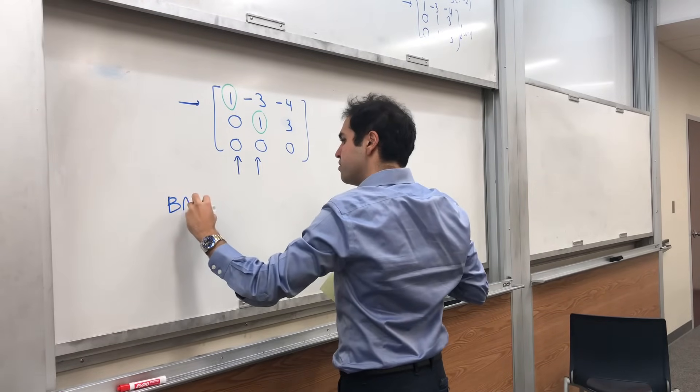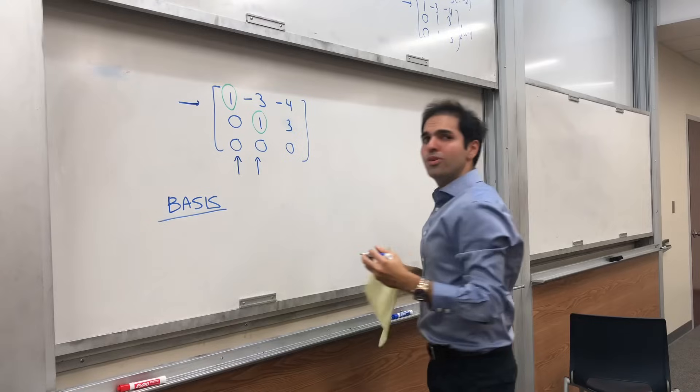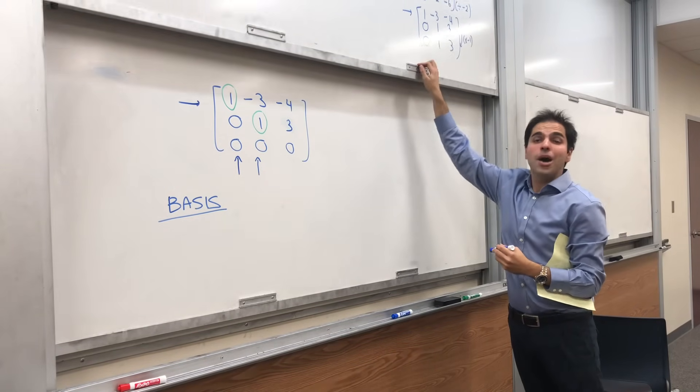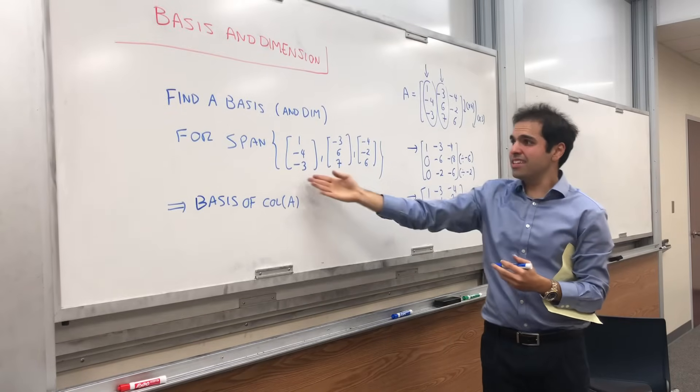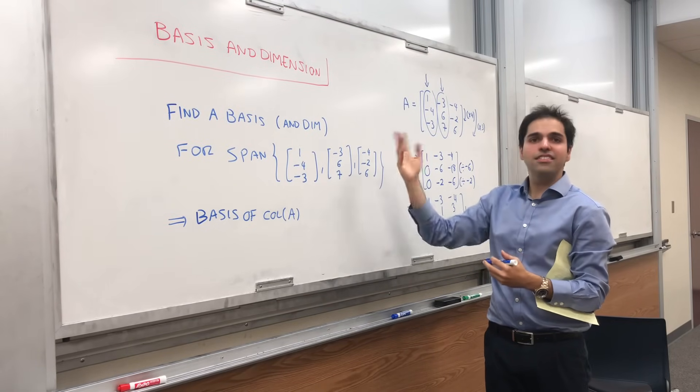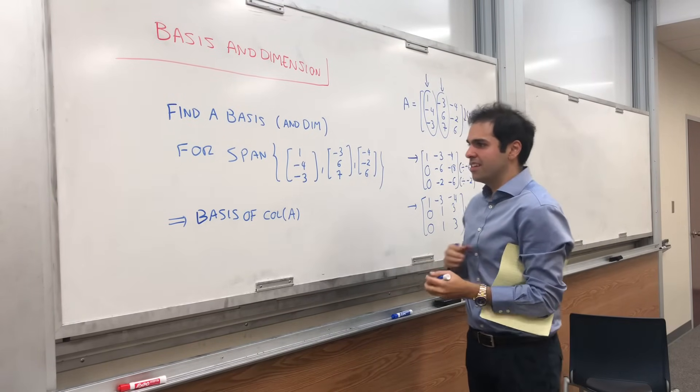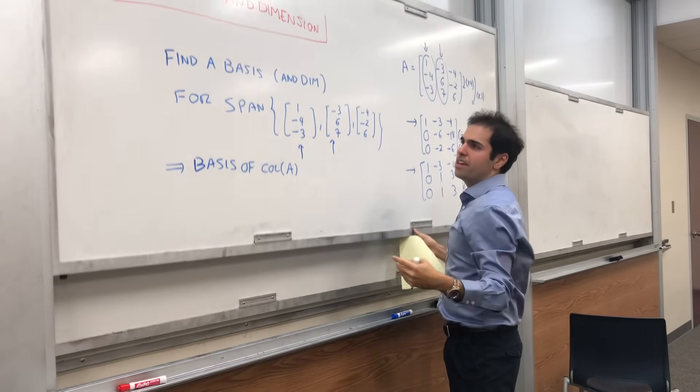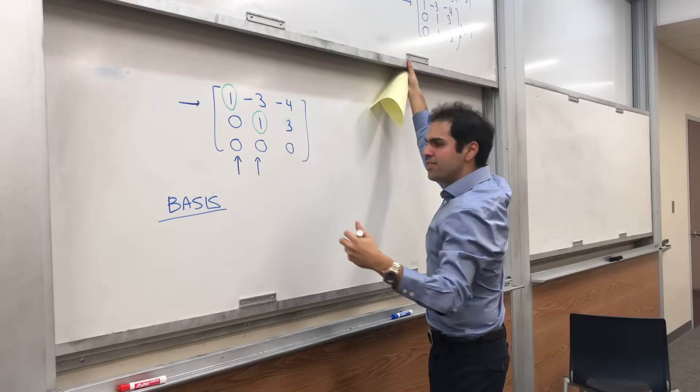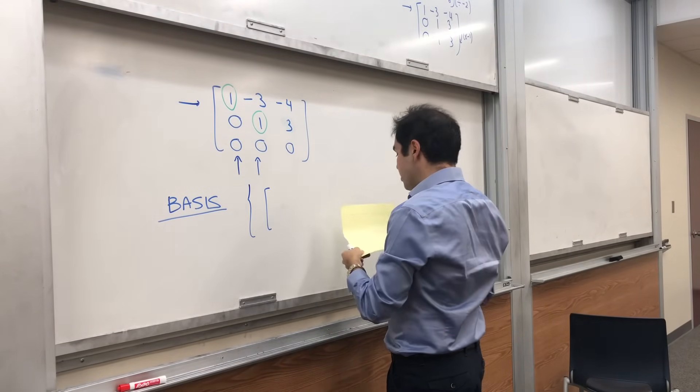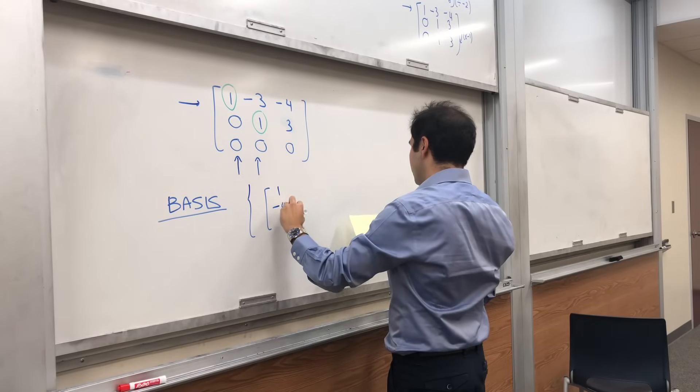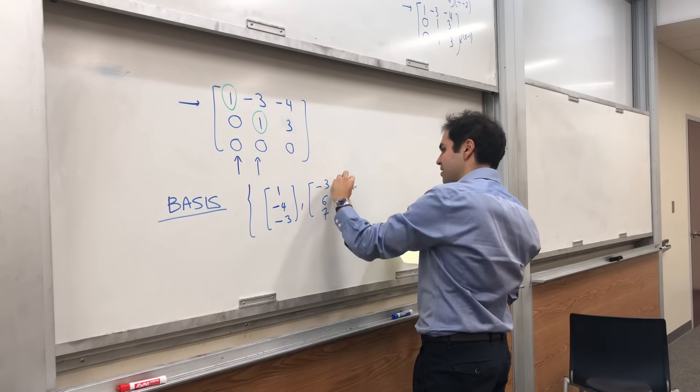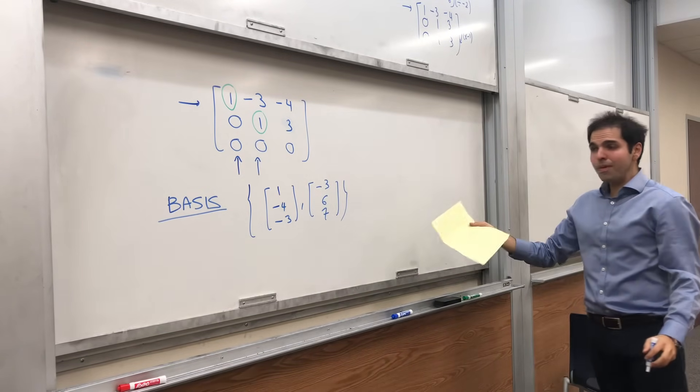So basis is the cool thing. Not only a basis for the column space, but also a basis for your original space, because this is the same as the column space. In other words, to find the basis of your original space, you just pick the first two vectors here. So the basis is simply [1, -4, -3] and [-3, 6, 7]. That's a basis.